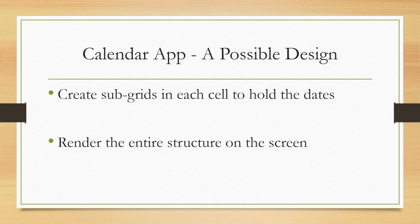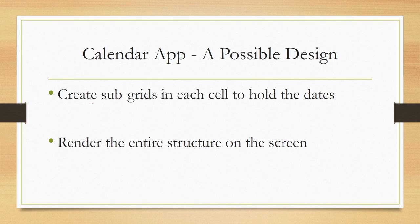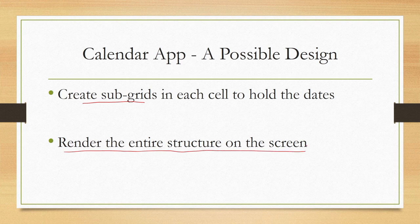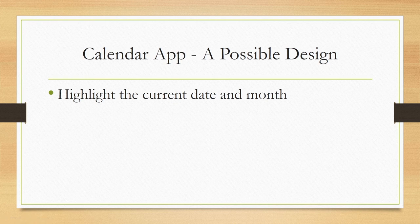For each cell in the grid representing a month, there are dates within a month, so for representing the dates or days, we need to create a subgrid for each cell in the higher-level grid. We also need to create subgrids in each cell to hold the dates or days. Finally, we need to render the entire structure on the screen — these are our requirements which we have identified. One more requirement can be that we may also highlight the current day and month, or the current date. That may be an additional requirement we would like to have in our app.